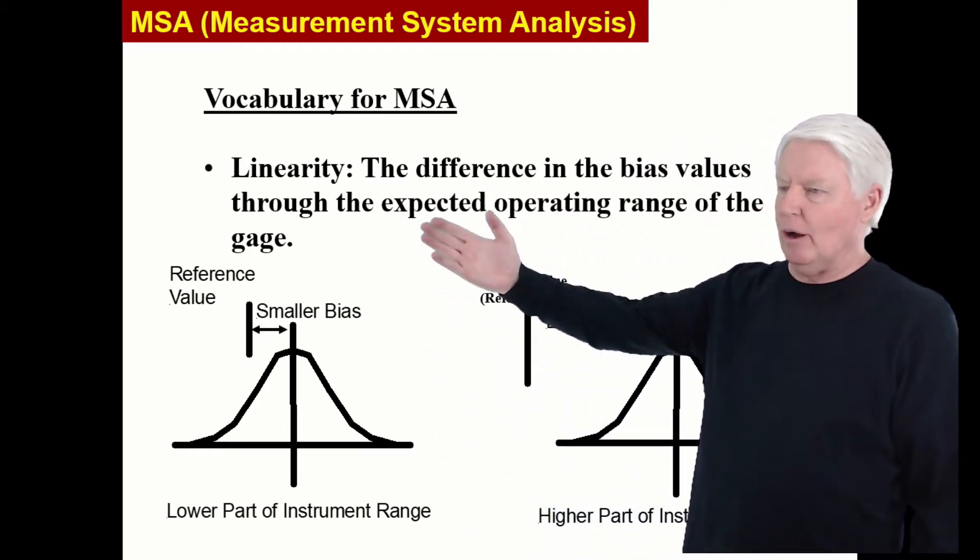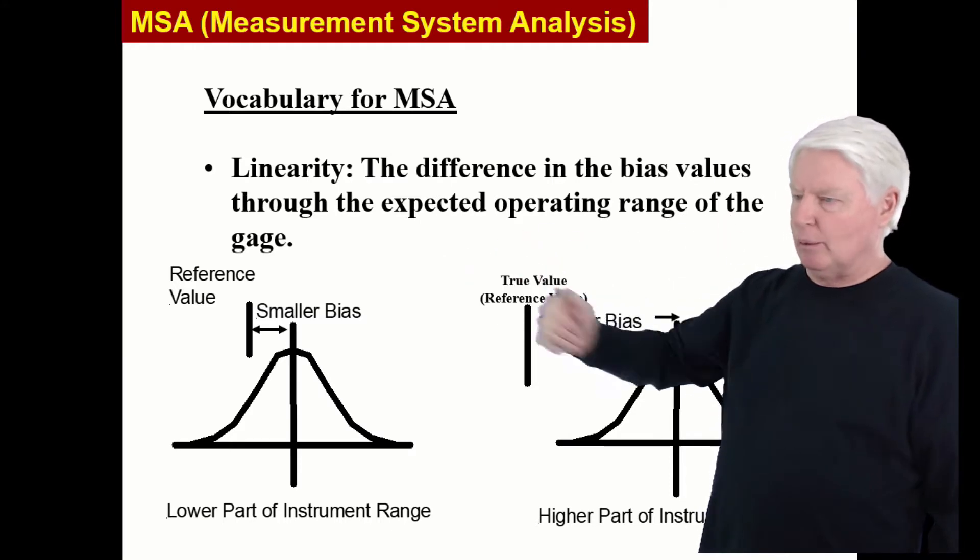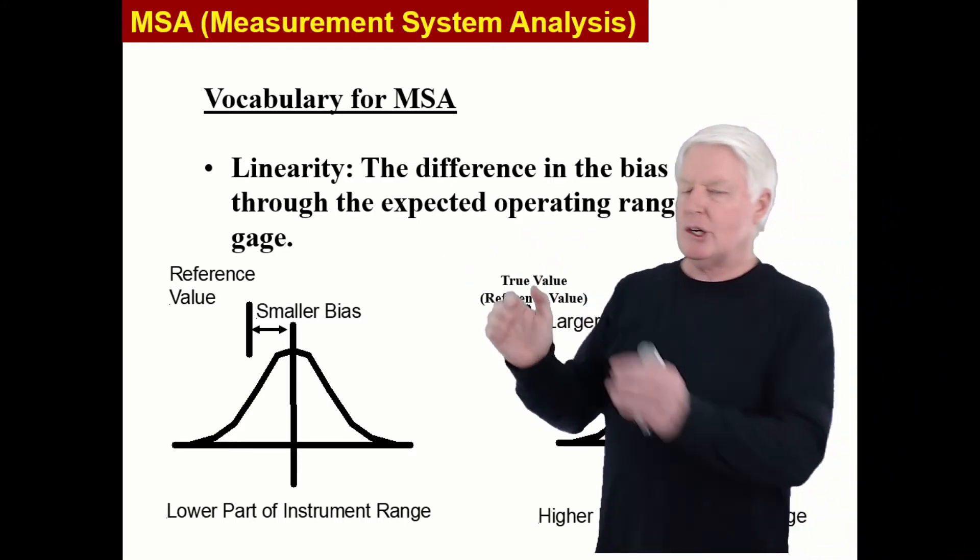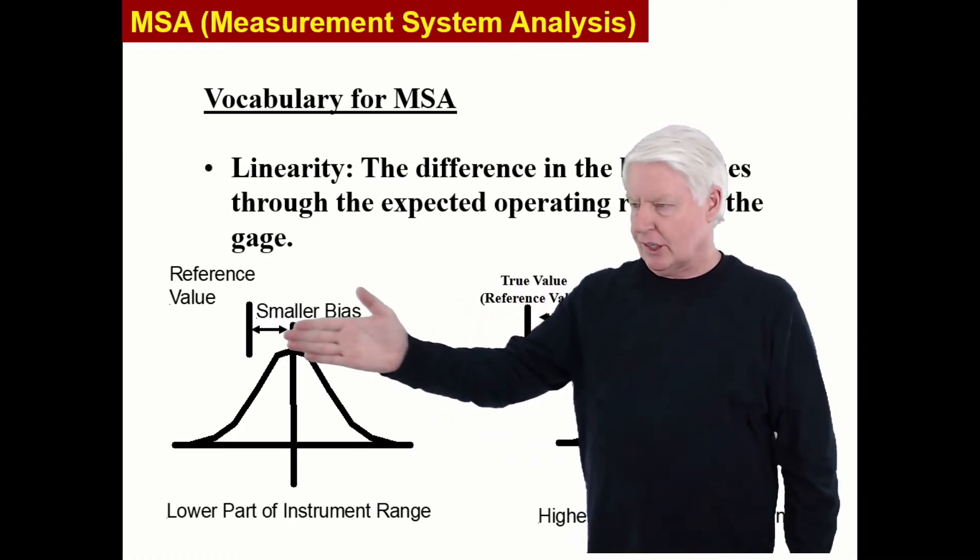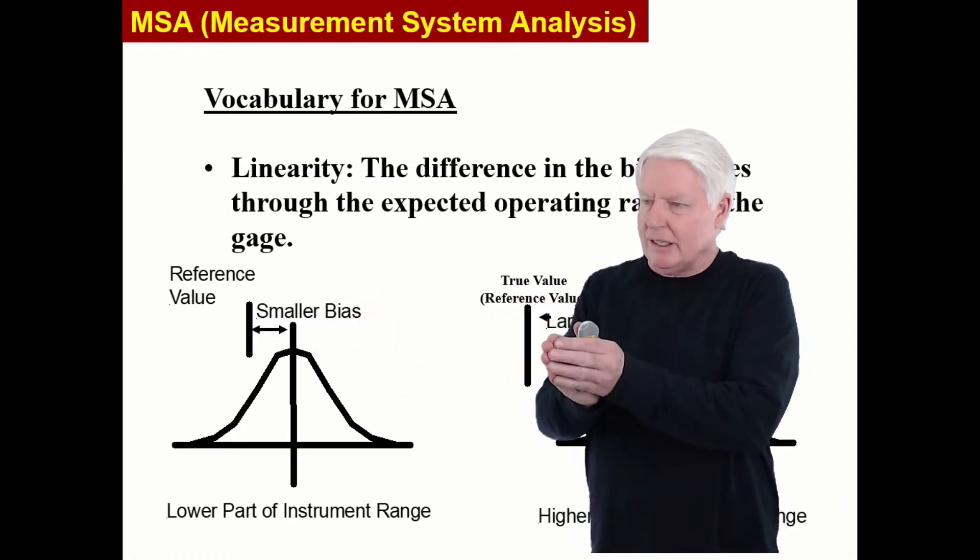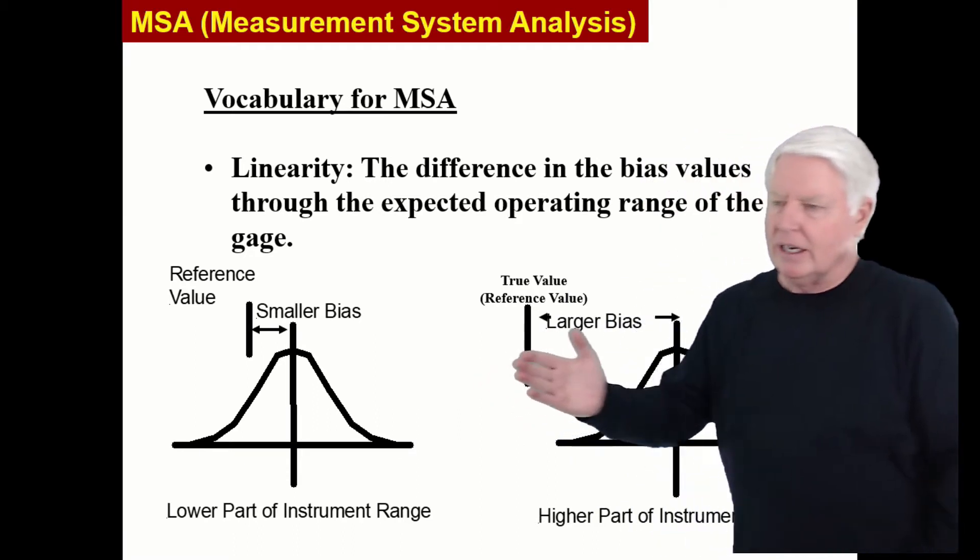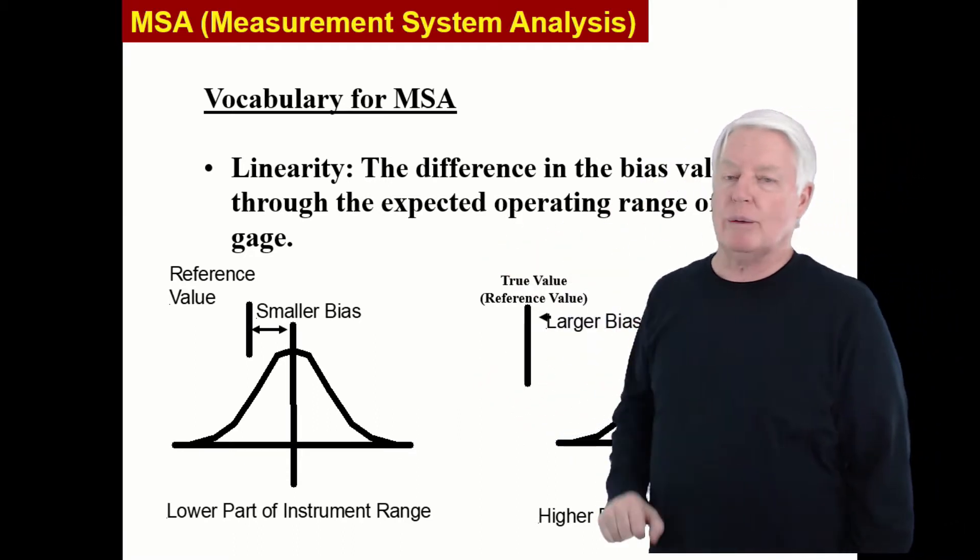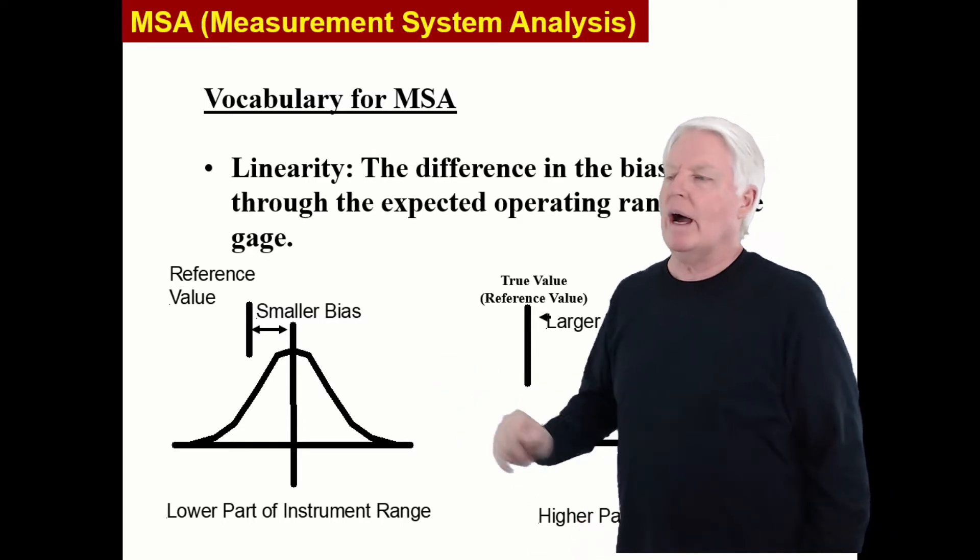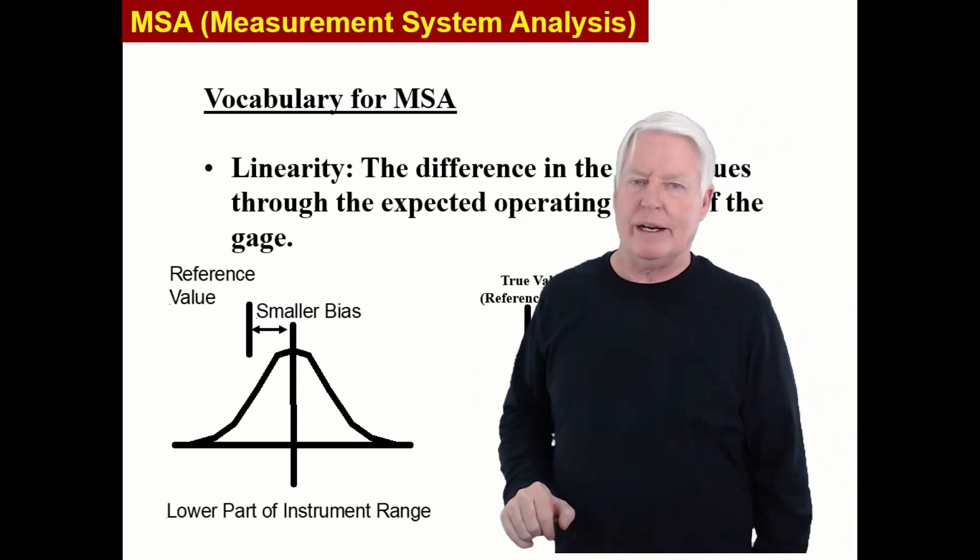The difference in the bias values throughout the expected operating range of the instrument. So maybe you measure from 0 to 10 centimeters and this is your bias. Then you go from 10 centimeters to 20 centimeters and the bias changes. It changes over the operating range of the instrument. Let's go to the whiteboard and let me explain in a little greater detail.